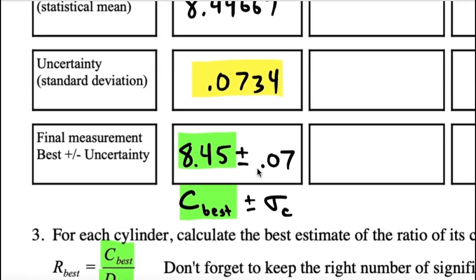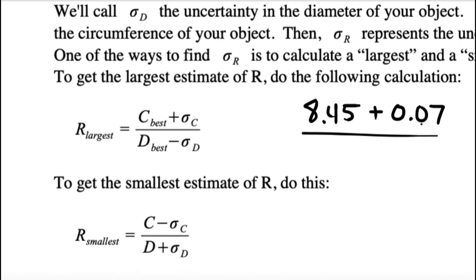Now, worst case scenario would be, what if you took that 8.45 circumference, and let's say it was off by as much as 0.07. So, I'm saying, you got 8.45 as your best estimate, but it could be off by as much as 0.07. We want to add that on top to get the biggest possible circumference that there might be. Then, for the denominator, we will actually subtract, in this case, his uncertainty.